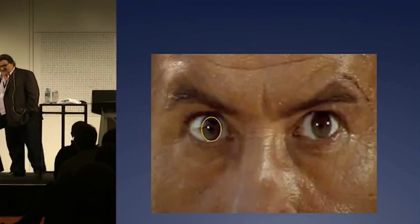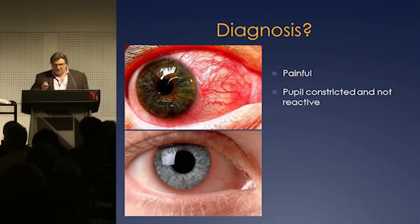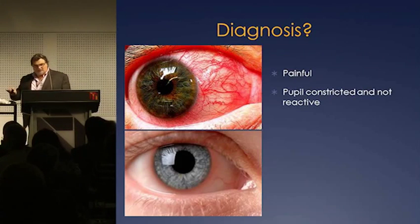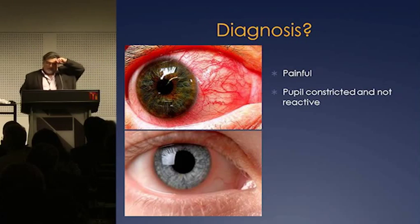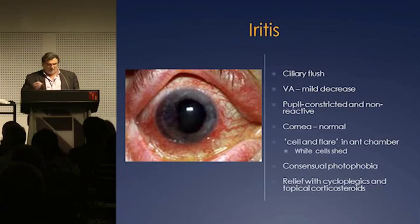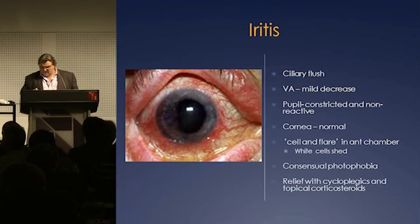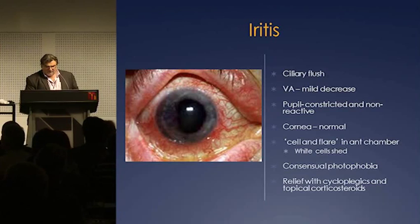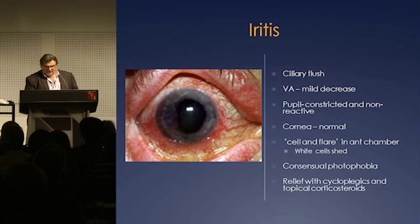So let's look at the cornea. The pupil is constricted and not reactive. The diagnosis? This is iritis, also called uveitis. One of the things to see here is the ciliary flush — see that little flush, that redness just around there? That's a ciliary flush — a little more pronounced in this image, but that's a nice example.